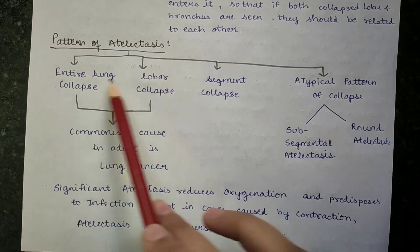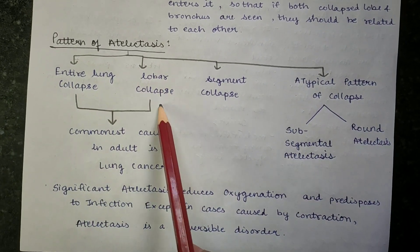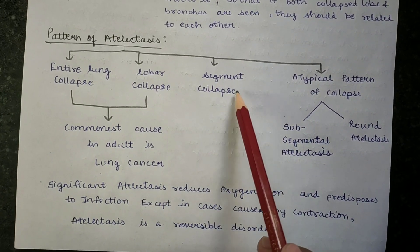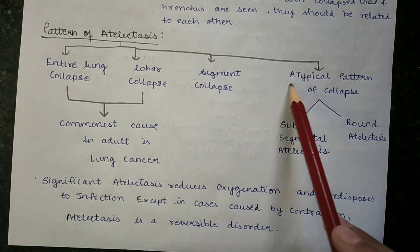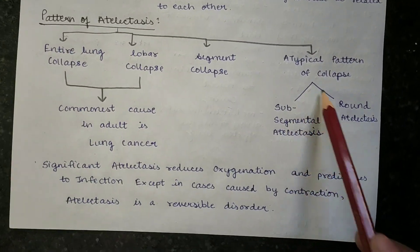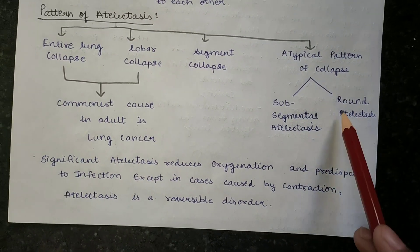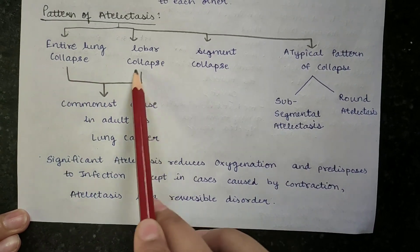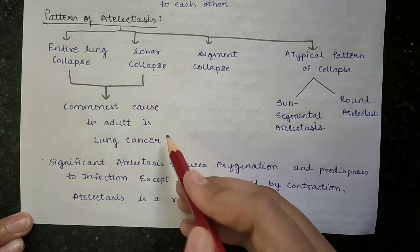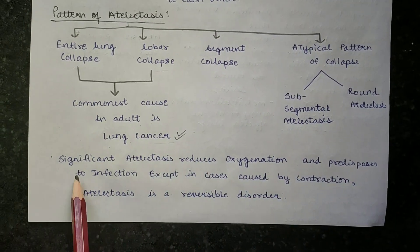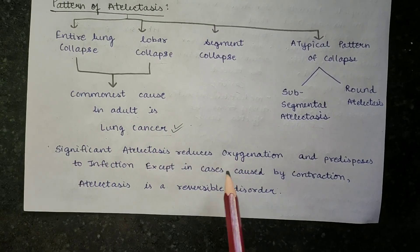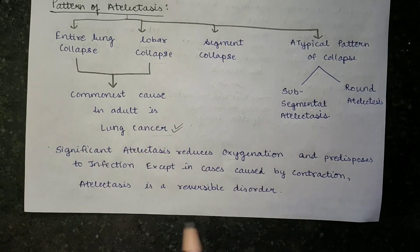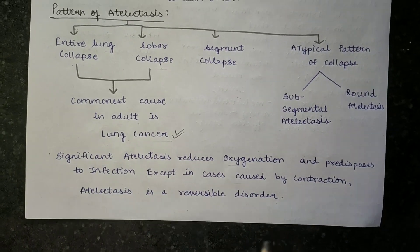The patterns of atelectasis are divided into four types: entire lung collapse, lobar collapse, segmental collapse, and atypical patterns, which are further divided into sub-segmental atelectasis and round atelectasis. The commonest cause of entire lung collapse or lobar collapse in adults is lung cancer — this you have to remember. Significant atelectasis reduces oxygenation and predisposes to infection, except in cases caused by contraction. Atelectasis is a reversible disorder.